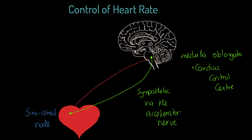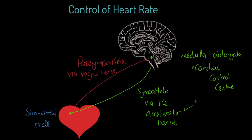It's also worth being aware in this big picture that we also have parasympathetic control. This parasympathetic is via a nerve called the vagus nerve. And this nerve — what this does is it decreases heart rate; it stimulates the heart to decrease. We call that parasympathetic stimulation. So imagine at the start of exercise we get sympathetic stimulation via the accelerator nerve, and at the end of exercise we get parasympathetic via the vagus nerve, which of course decreases the heart rate.